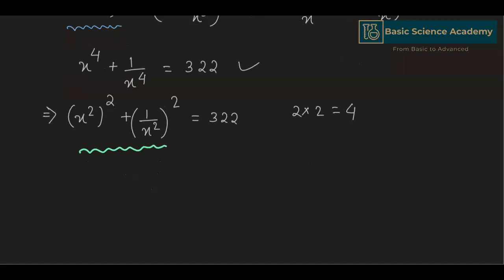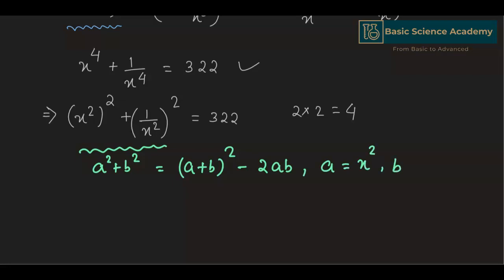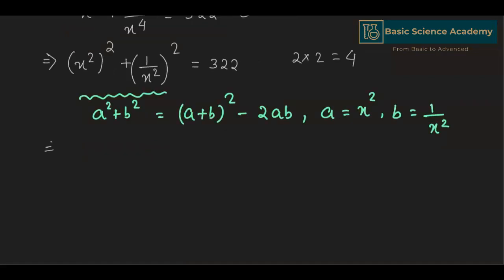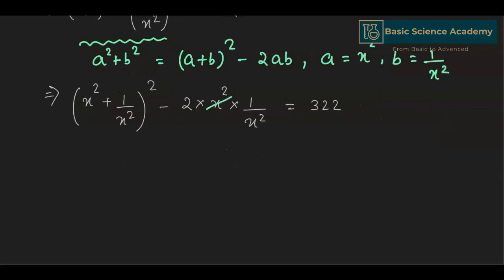Now, this is in the form of a squared plus b squared, which equals a plus b whole squared minus 2ab, where a equals x squared and b equals 1 divided by x squared. So this gives us x squared plus 1 divided by x squared, whole squared, minus 2 multiplied by x squared multiplied by 1 divided by x squared, equals 322. Since x squared and 1 divided by x squared cancel out, we get x squared plus 1 divided by x squared, whole squared, minus 2 equals 322.